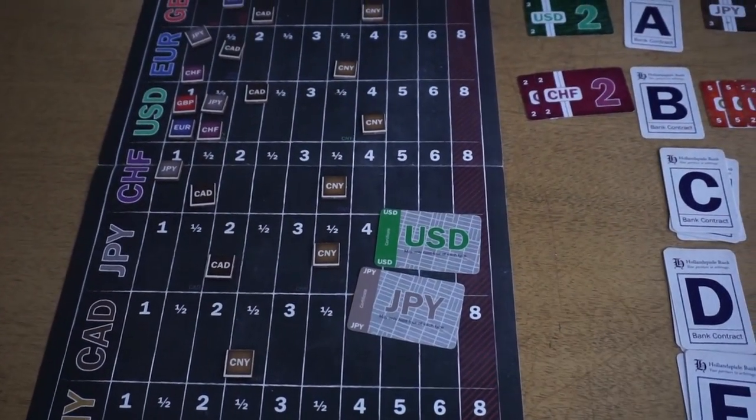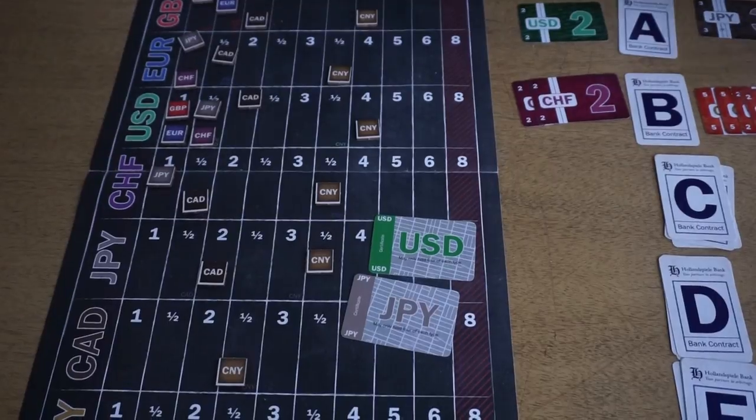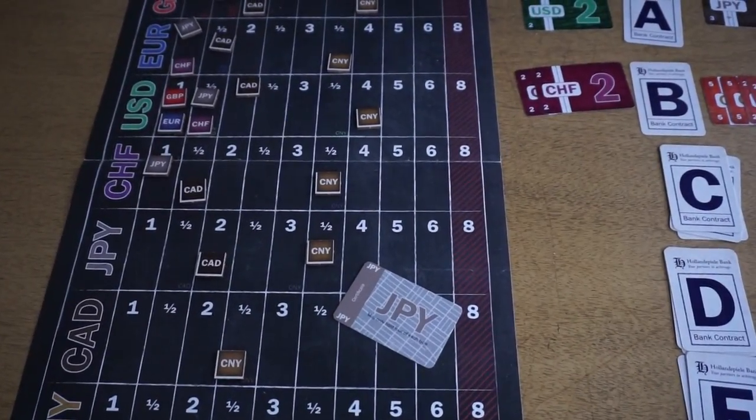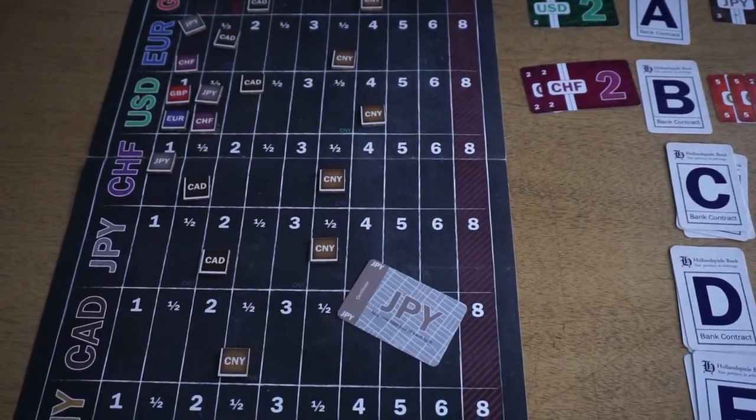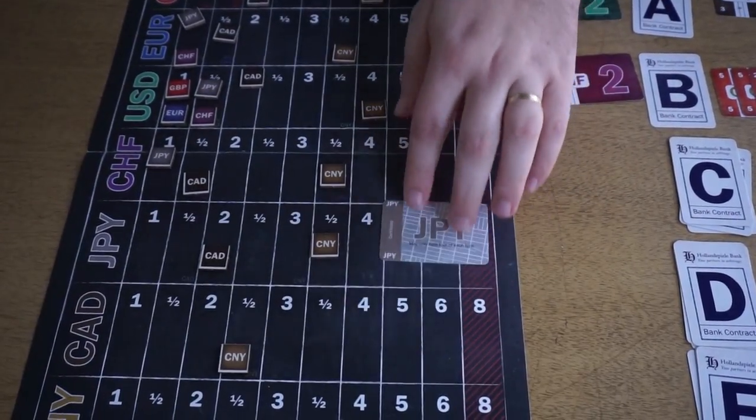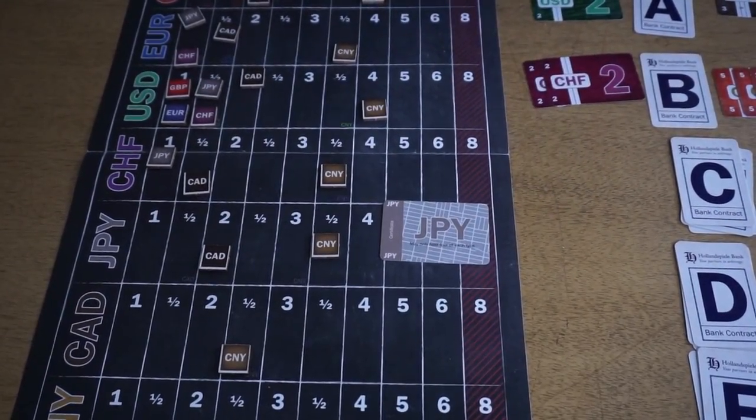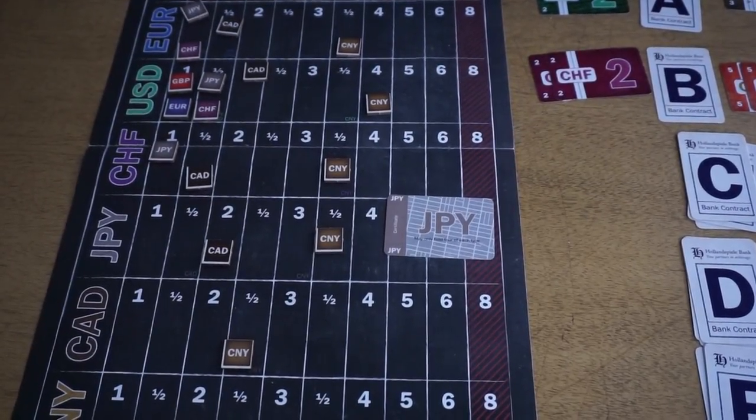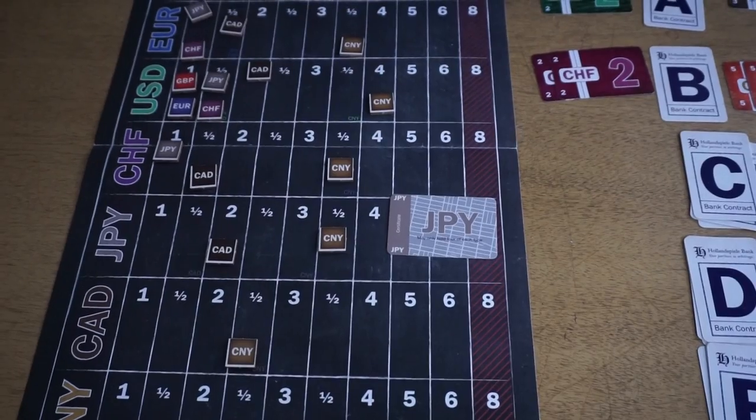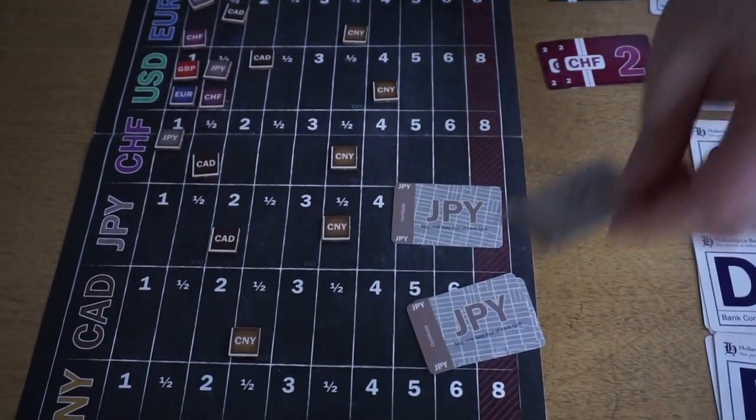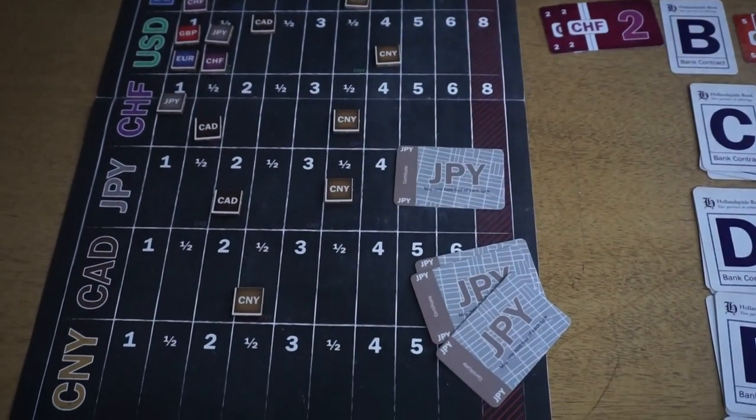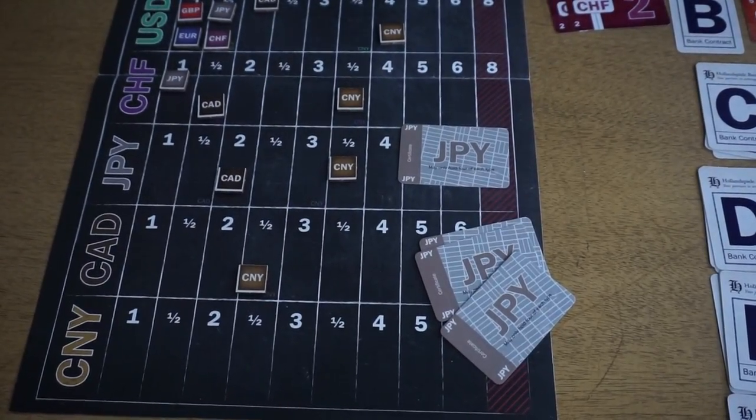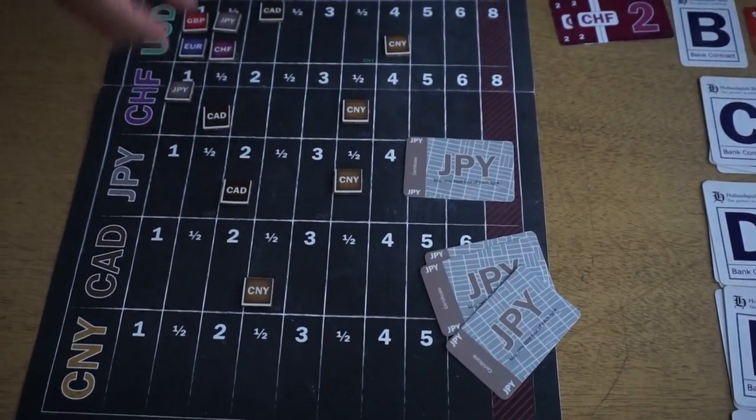Now, the second action you can take is you can divest. You can sell stocks you have. You can sell stocks, as many as you like, in a single currency type. So I'm going to sell as many JPY if I like. The catch is that everyone else, as part of my turn, can also sell as much JPY as they want to sell. So if I sell one, Bob can sell two, and Carol can sell one, and that's four JPY, which means that the JPY is going to be weakened four times.